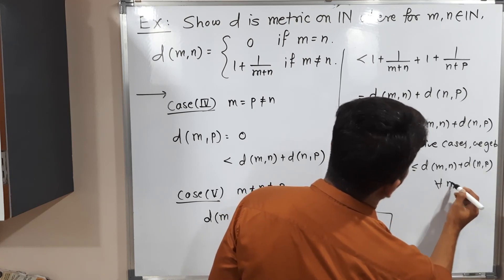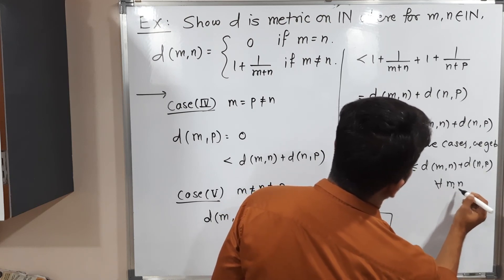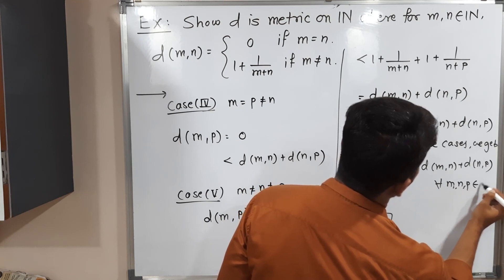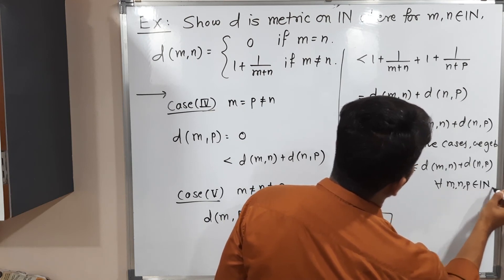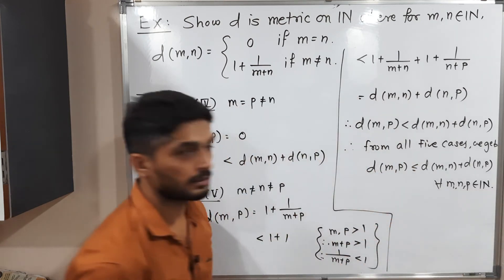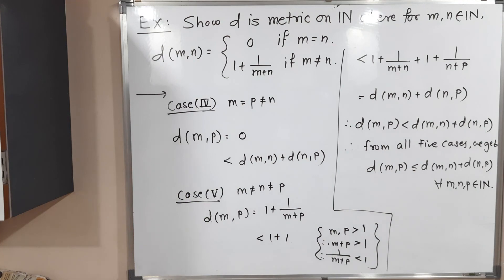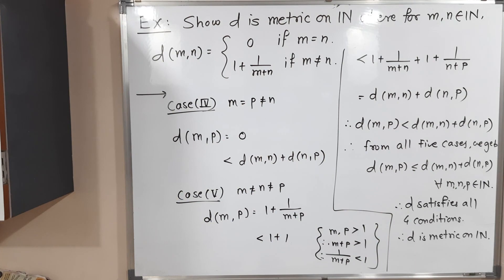Combining all five cases, we get D(m,p) ≤ D(m,n) + D(n,p) for all m, n, p belonging to the set of natural numbers. Therefore D satisfies all four conditions of a metric, and we can declare that D is a metric on ℕ. Thank you.